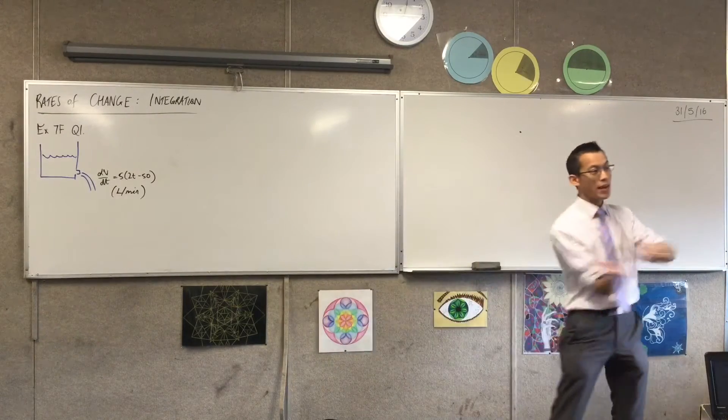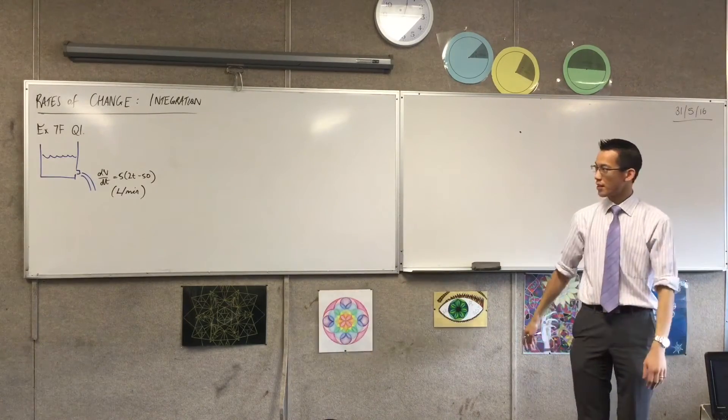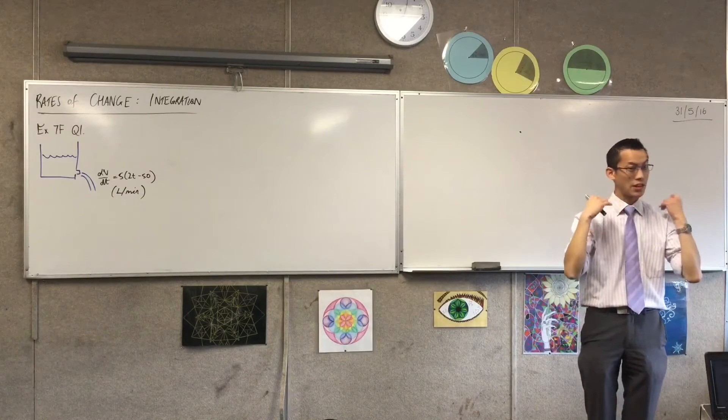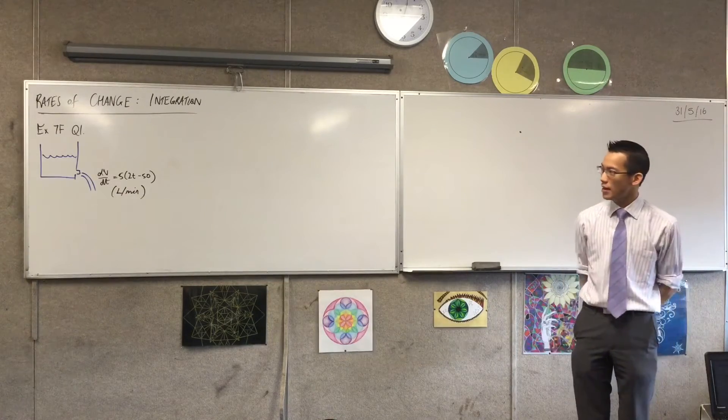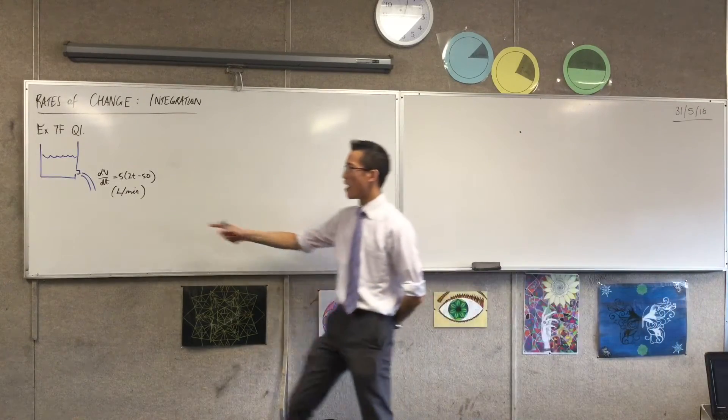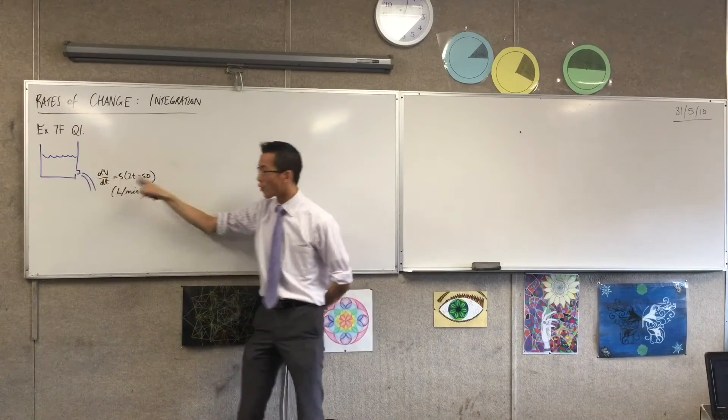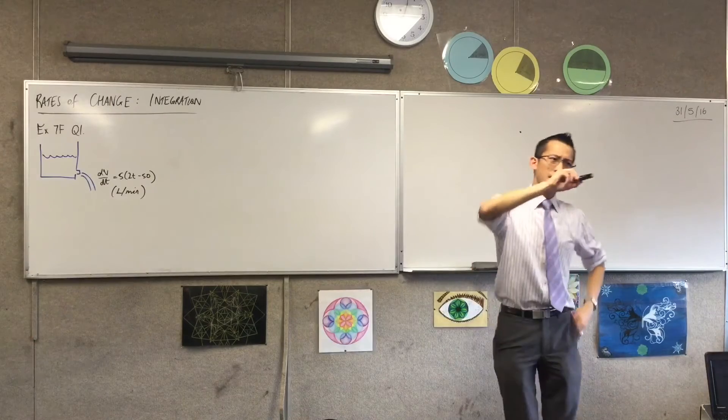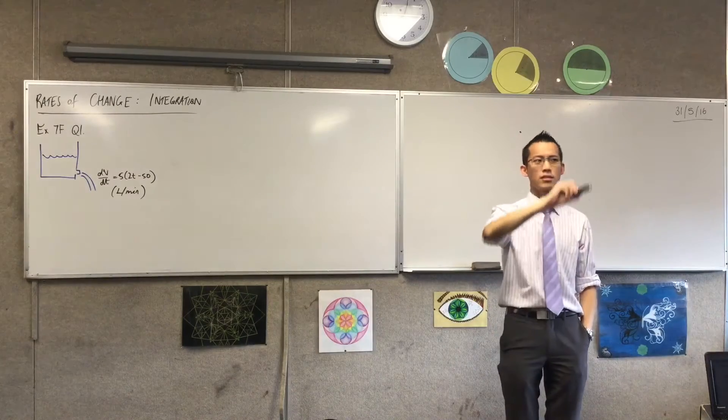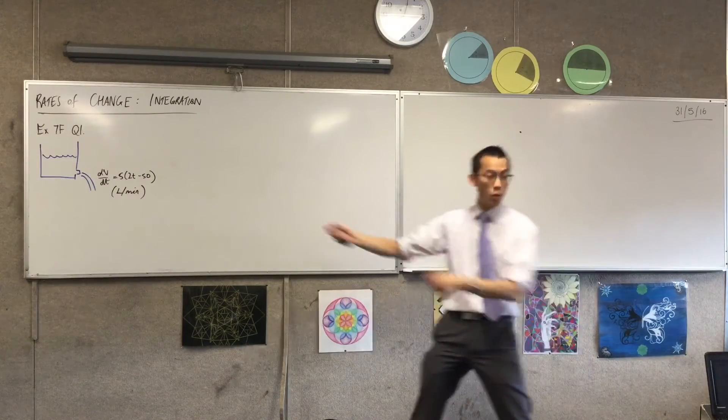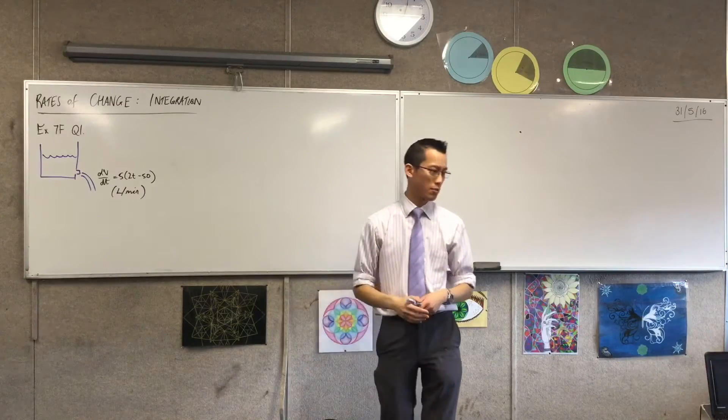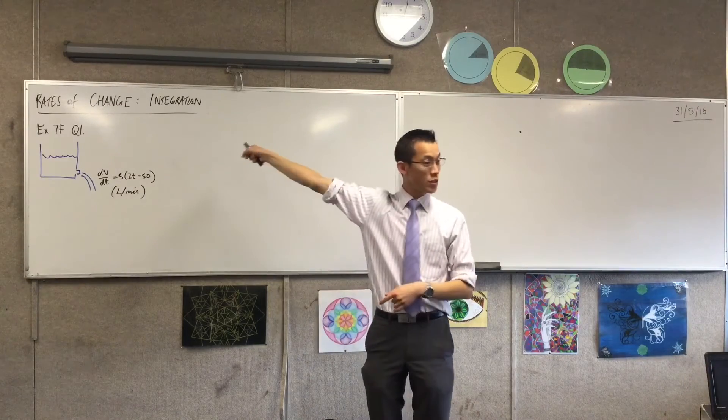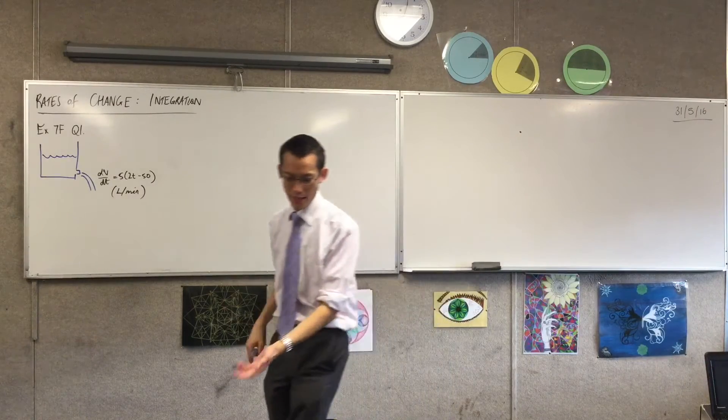So the water starts coming out at this amount of litres per minute, but it seems to be slowing down, and eventually it stops. So you've got a picture in your head for how a quantity is changing, and the rate at which it changes is also changing. Water is coming out, but it's slowing down as it progresses. So this is the scenario, and again, we're dealing with litres per minute.